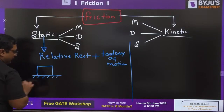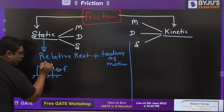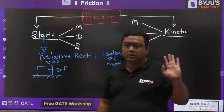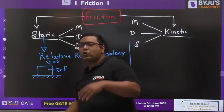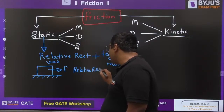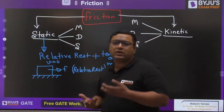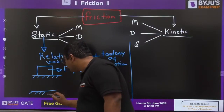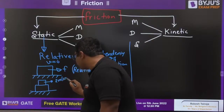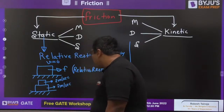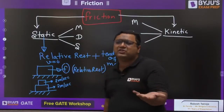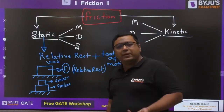If you want to understand relative rest: consider a body on which a force F is applied but the velocity of the body is zero. The force is trying to move the body but the velocity is zero. The surface is at rest and the block is at rest, so this is the condition of relative rest. Also consider two blocks both moving with 2 meters per second — the relative velocity of B with respect to A is zero, so this is also relative rest.